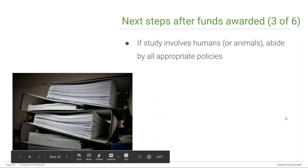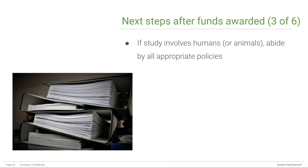If your research study involves humans, you and your staff must abide by all human subjects policies. If it involves animals, you must abide by all animal policies. These policies are crucial, and if you or your staff make a mistake that violates one of them, immediately contact the appropriate office at your institution for guidance. Never try to cover it up, because that only makes it worse.